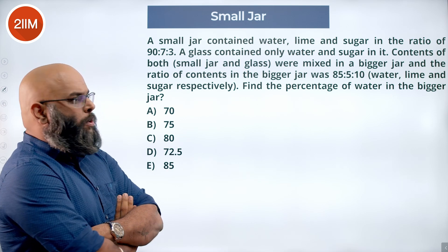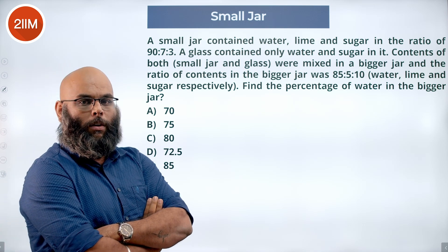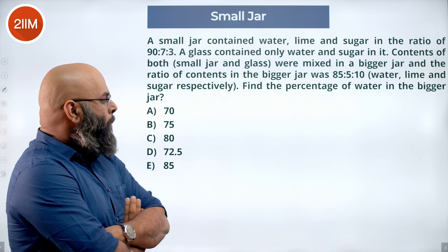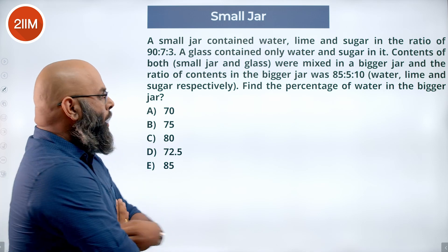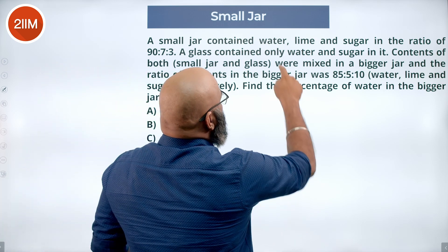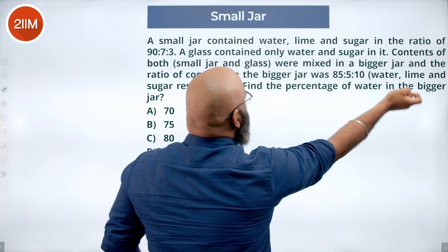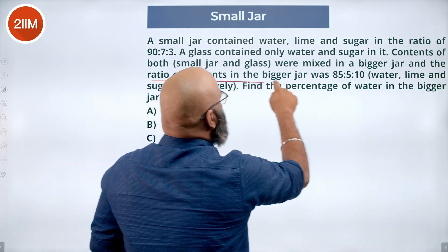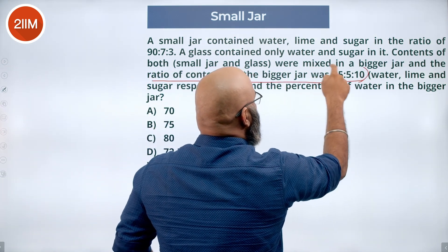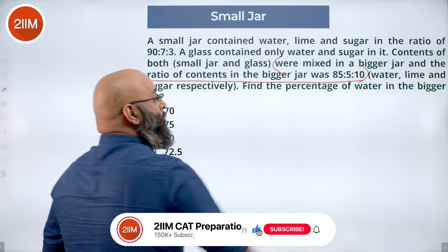Now when you read this question, it might sound like we have to solve a lot of things, but actually when you see this question clearly in depth, you notice that the bigger jar was mixed and the ratio of the contents of the bigger jar is 85:5:10.